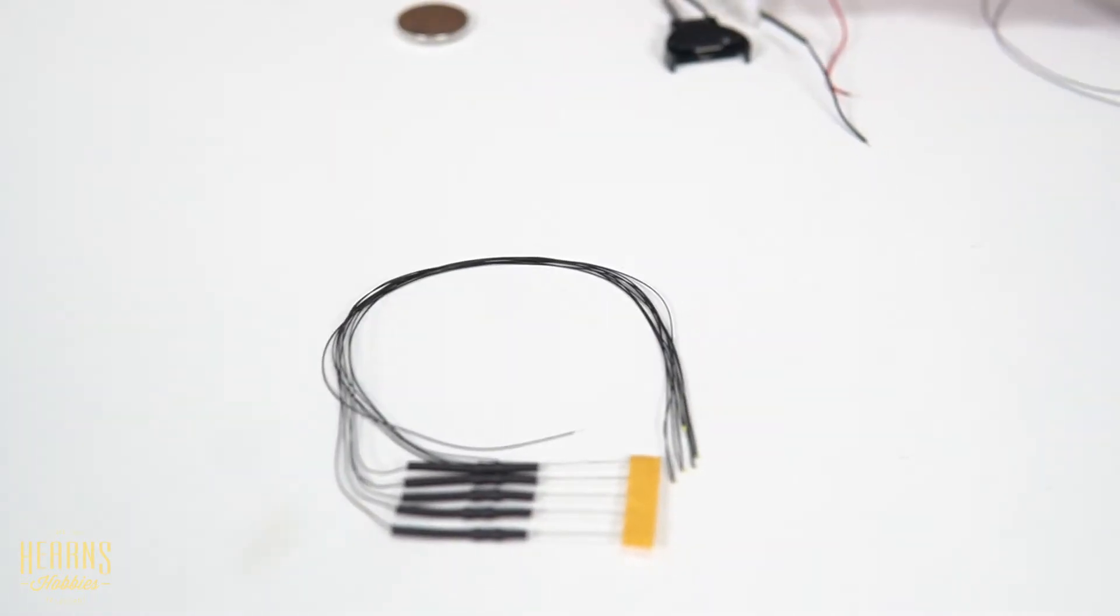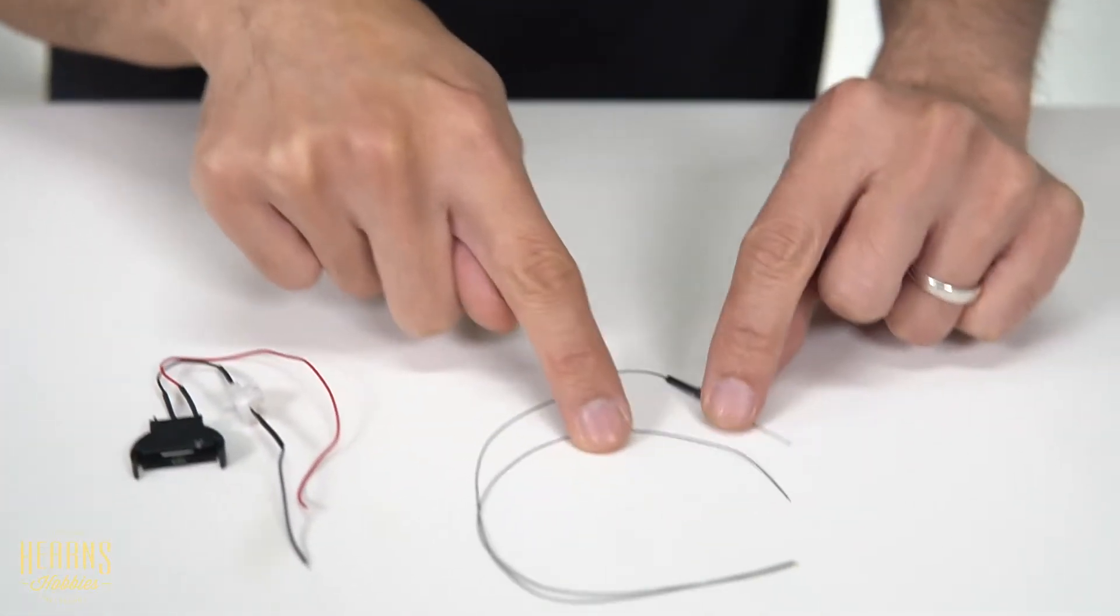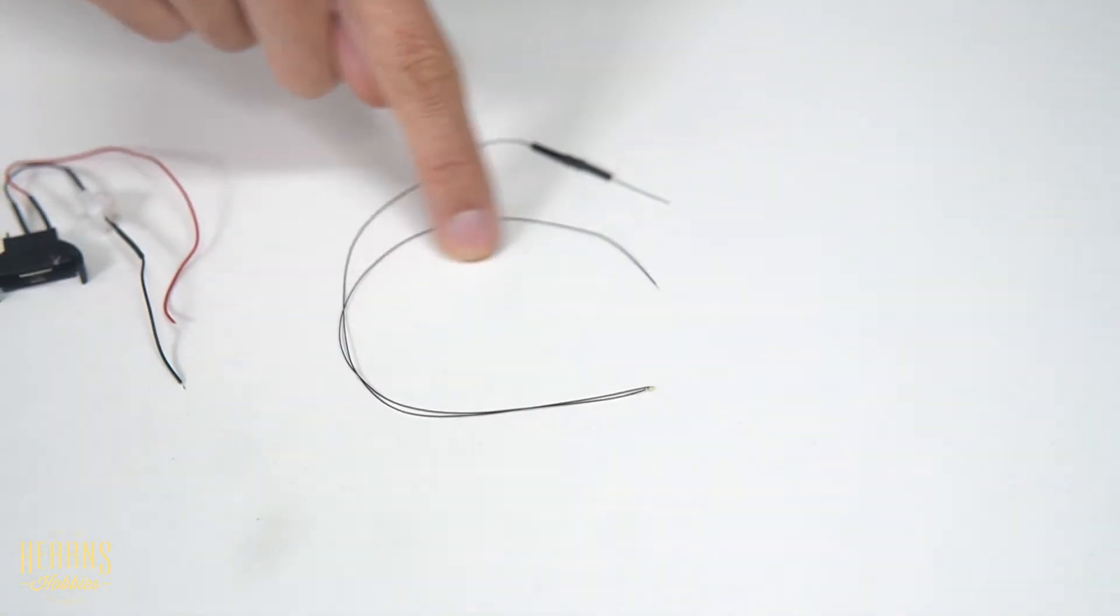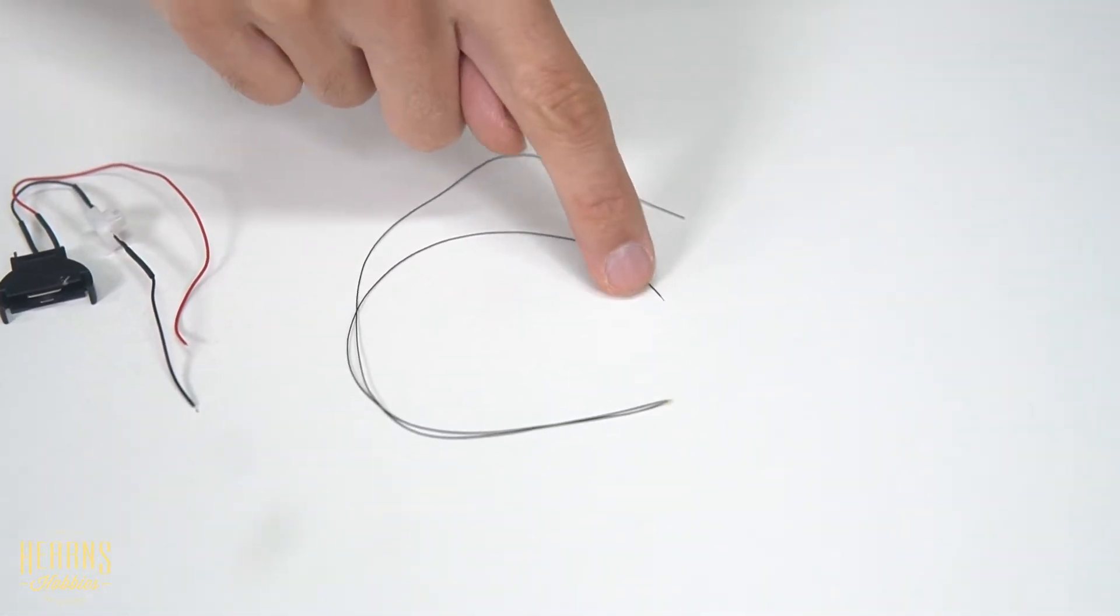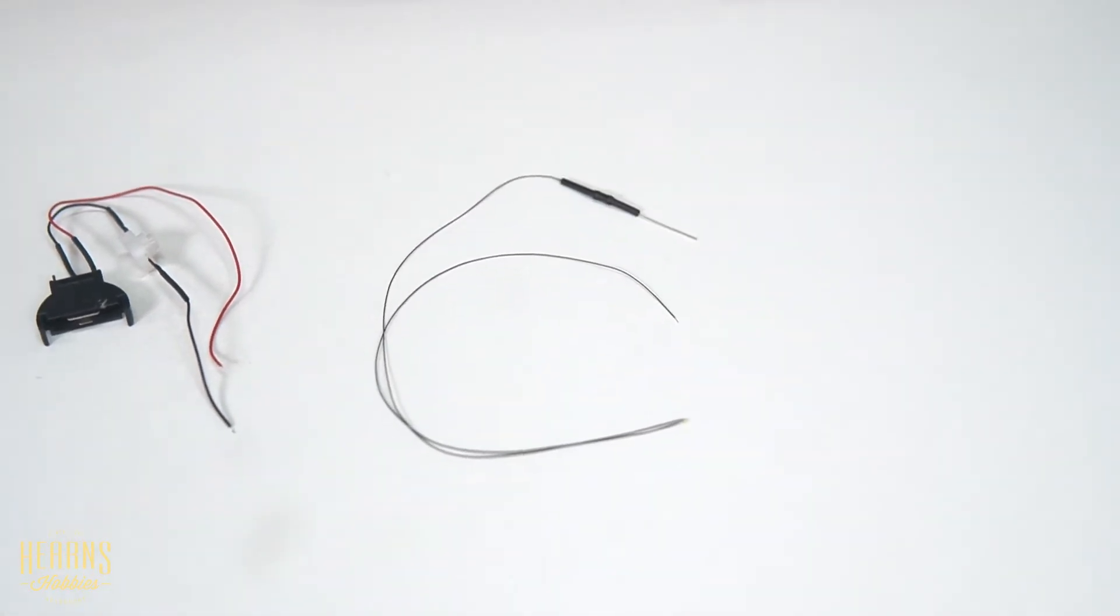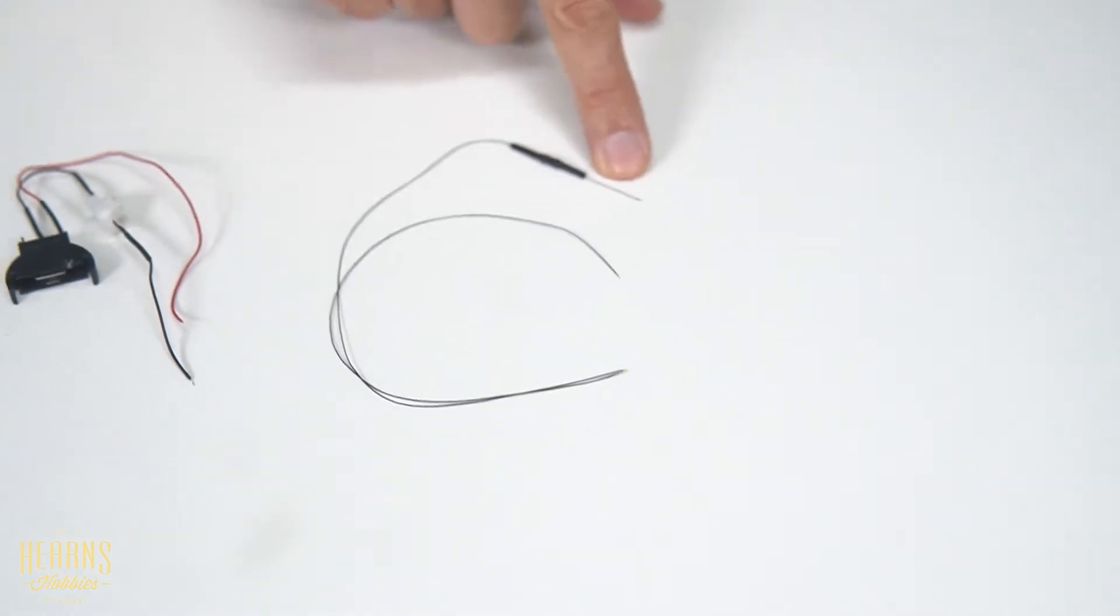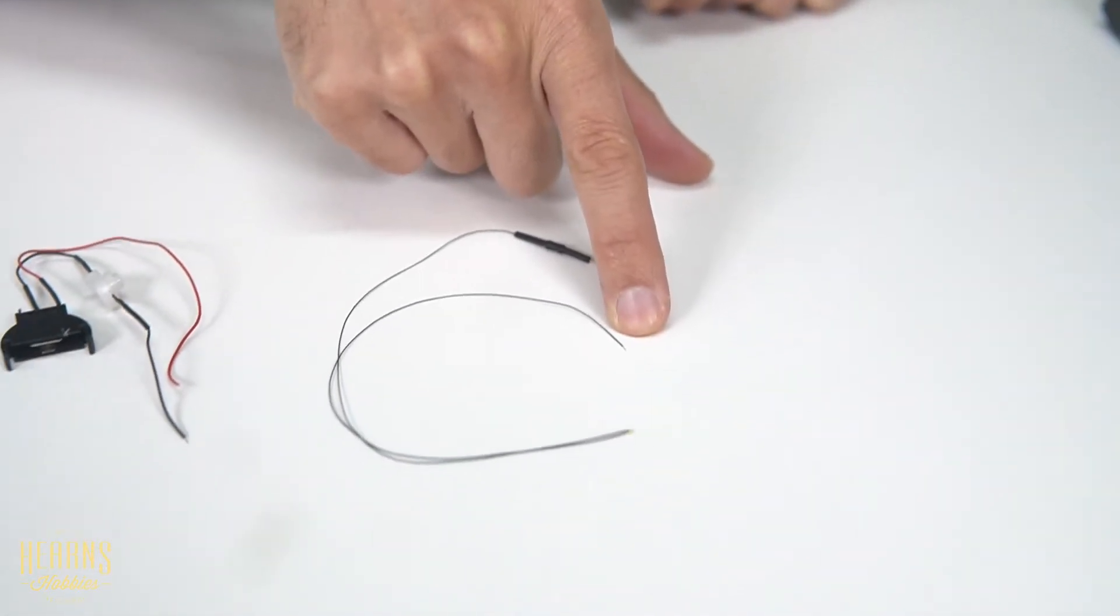I've separated one out here. There's the LED on the end, and then it's got the fine wire attached. You've got this one here which is without the resistor, and this one here with resistor. The resistor one is the positive, and non-resistor is the negative.